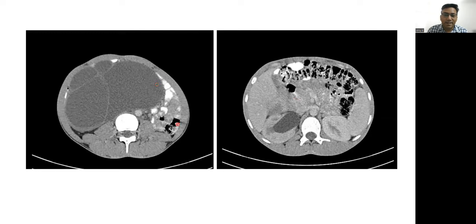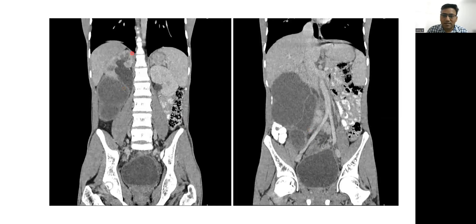This is the contrast-enhanced study which shows mild enhancement of the septa and better depiction of the right-sided hydronephrosis. On the coronal section, apart from the mass effect on the right proximal ureter, there is also mass effect on the major abdominal vessels. The abdominal aorta is displaced to the left side, and there is abutment of the right side of the common iliac artery.